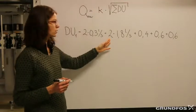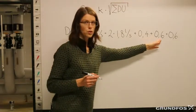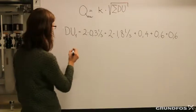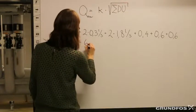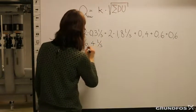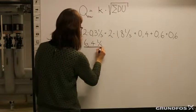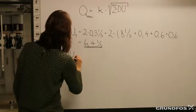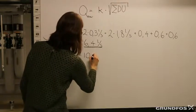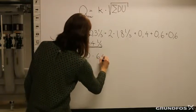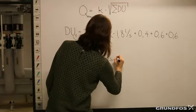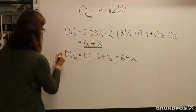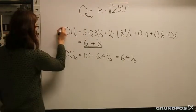First we will calculate the discharge flow from one dwelling. We have 2 washbasins, 2 toilets, 1 shower, 1 dishwasher, and 1 washing machine. The total discharge flow from one dwelling will be 6.4 liters per second. We have 10 dwellings, so the discharge flow from 10 dwellings will be 10 times 6.4 liters per second, which equals 64 liters per second. That's the sum of the discharge units.